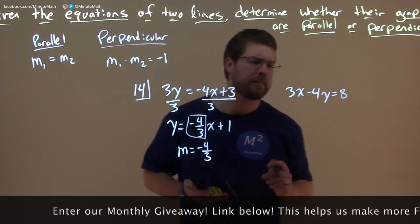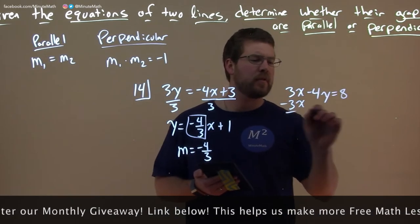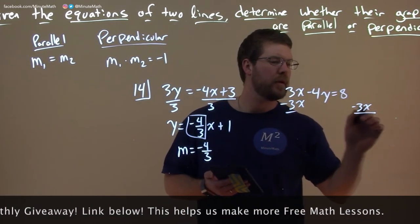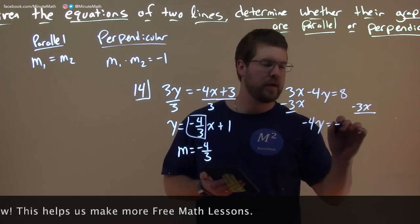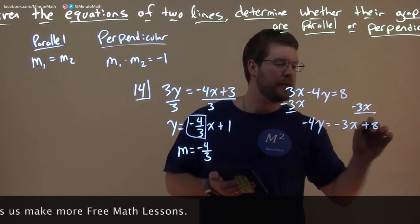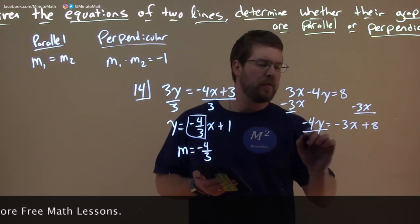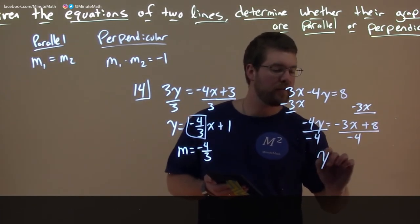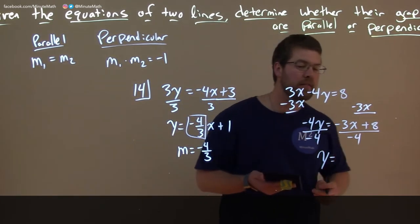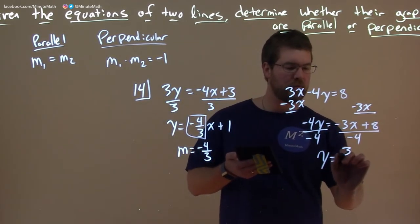Let's go deal with the other equation. We'll subtract the 3x to both sides, and we're left with negative 4y equals, let's put the negative 3x first, plus 8. Divide both sides by negative 4 and we're left with y by itself here.